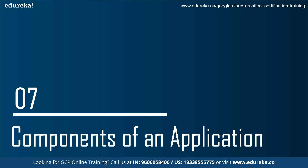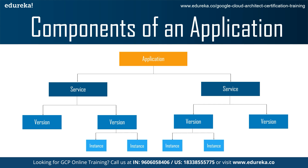Now let's look at the components of an application. The App Engine application is created under your Google Cloud project. When you create an application resource, it is a top-level container that includes service, version and instance resources. All resources are created in the region you choose, including your app code, settings, credentials and metadata. Each App Engine application includes at least one service — the default service — which can hold many versions. The diagram illustrates the hierarchy of an App Engine application running with multiple services, versions, and instances.